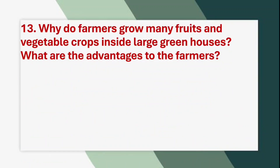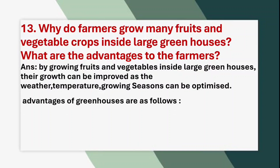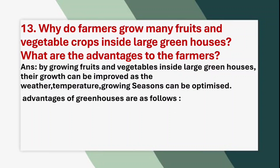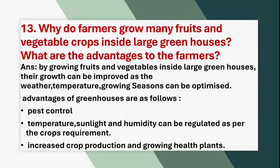Thirteenth question: Why do farmers grow many fruits and vegetable crops inside large greenhouses? What are the advantages to the farmers? Answer: By growing fruits and vegetables inside large greenhouses, their growth can be improved as the weather, temperature, and growing seasons can be optimized. Advantages include pest control, temperature, sunlight and humidity can be regulated as per the crop's requirement, leading to increased crop production and growing healthy plants.